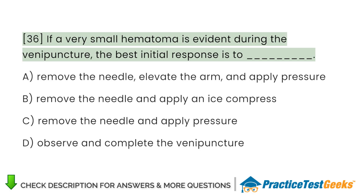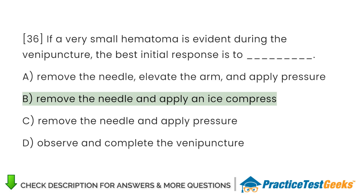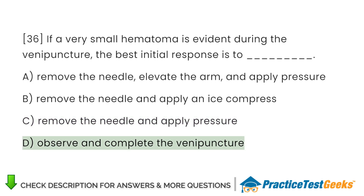If a very small hematoma is evident during the venipuncture, the best initial response is to A. Remove the needle, elevate the arm, and apply pressure. B. Remove the needle and apply an ice compress. C. Remove the needle and apply pressure. D. Observe and complete the venipuncture.